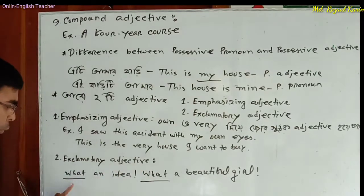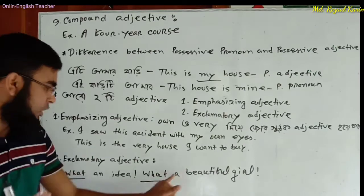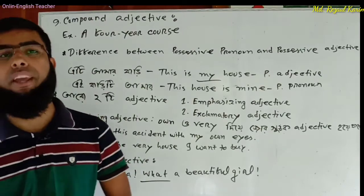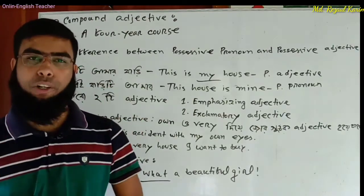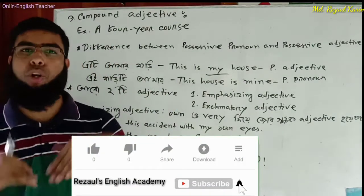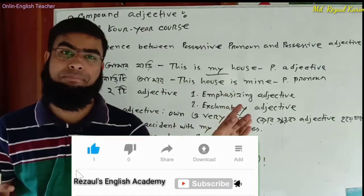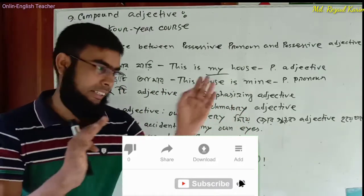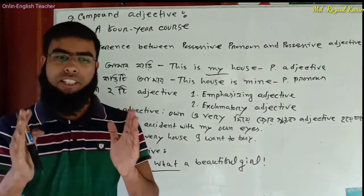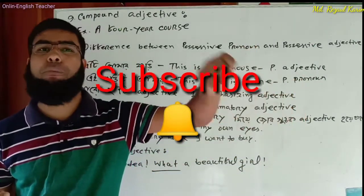Exclamatory adjective — for example: What an idea! What a beautiful girl! What a nice boy! — these are exclamatory adjectives. That is how you can identify the types of adjectives. Please subscribe to the channel and press the subscribe button.